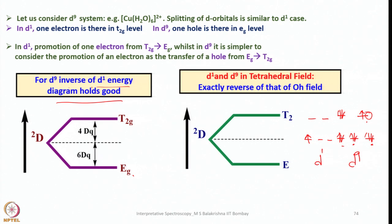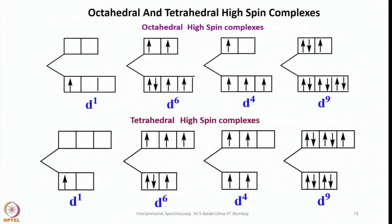Let us now look at different electronic configurations under octahedral as well as tetrahedral geometries — most of which we consider as high spin complexes. D¹ is a typical one; D⁶ has one electron and one pair; D⁴ is similar; and D⁹ has one electron in Eg. For tetrahedral high spin complexes, it does not make much difference: D¹ has one electron, D⁶ is very similar, and D⁴ and D⁹ follow analogously.